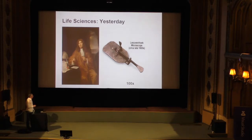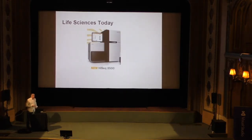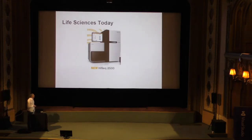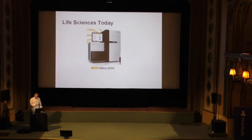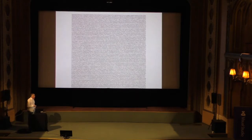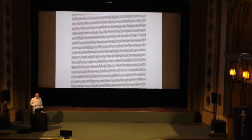Today we have much better instruments for looking inside cells. This is a DNA sequencer produced by Illumina. We have several of these on campus. With such an instrument, you can sequence a human genome in a couple of hours. The output looks like this — it's completely incomprehensible to the human eye. On this slide, you have the genome of the AIDS virus, which has 10,000 letters of DNA — A, C, G, T. It fits on one slide.